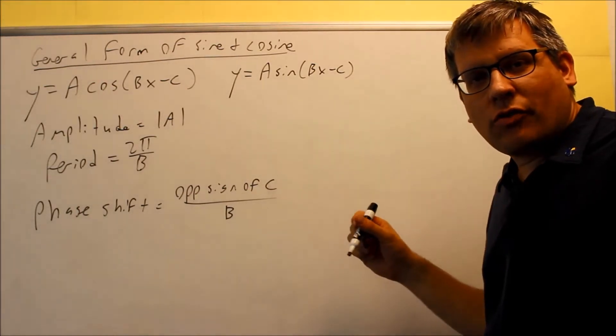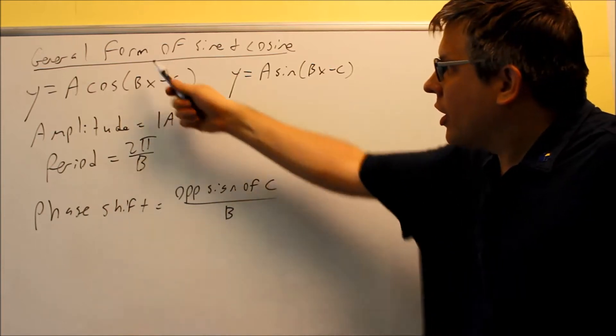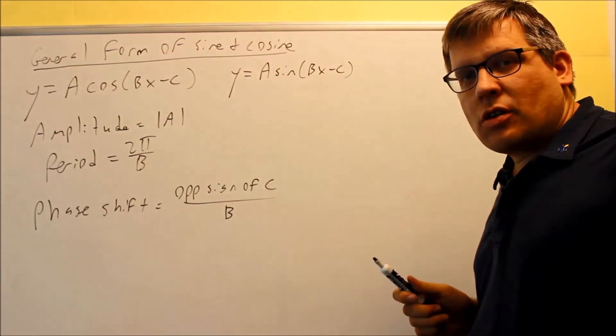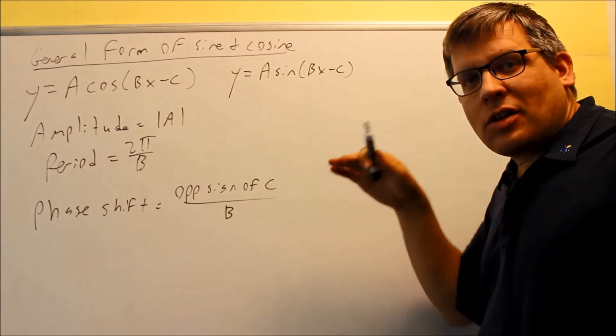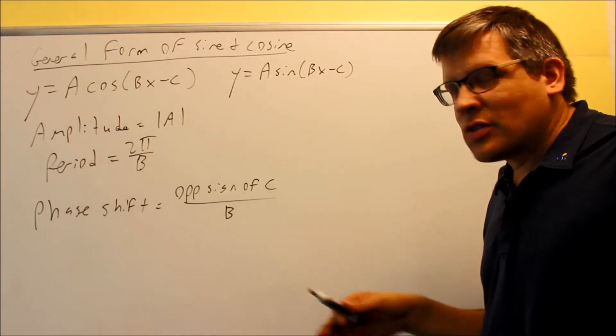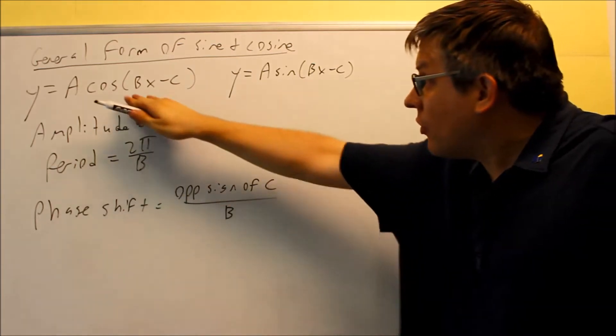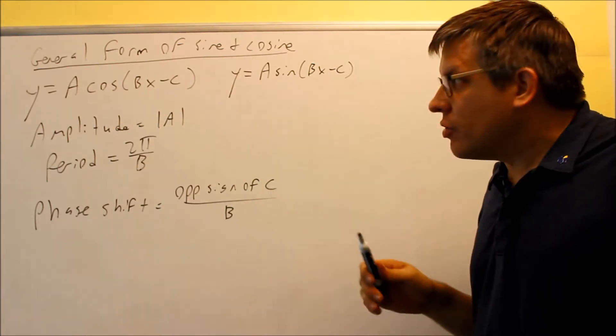We've already looked at the graphs of sine and cosine in a previous video, so now we're going to look at the general form of sine and cosine. Instead of grabbing the amplitude and the period from the picture like we talked about before, we want to grab that information off of the formula itself.